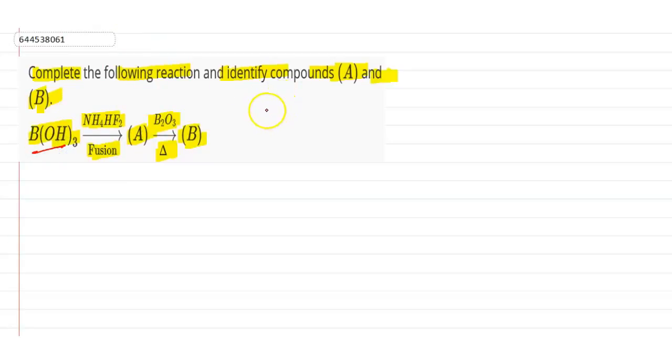boric acid, which is B(OH)3, reacts with NH4HF2 to give us NH4BF4. This is our compound A, which further reacts with B2O3 when we